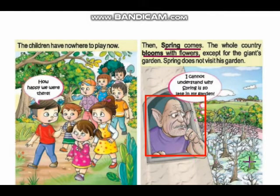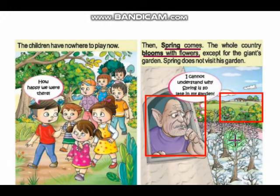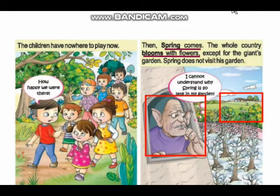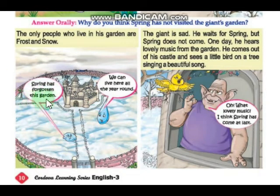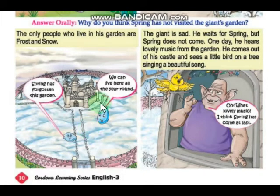The giant watches from his window. All other places are completely green and blooming, but spring doesn't visit his garden. The only ones living in his garden are frost and snow. Frost and snow means dryness and snow. They are happy that spring will not come and they can stay for the whole year. But the giant is very sad — he waits for spring, but spring does not come.